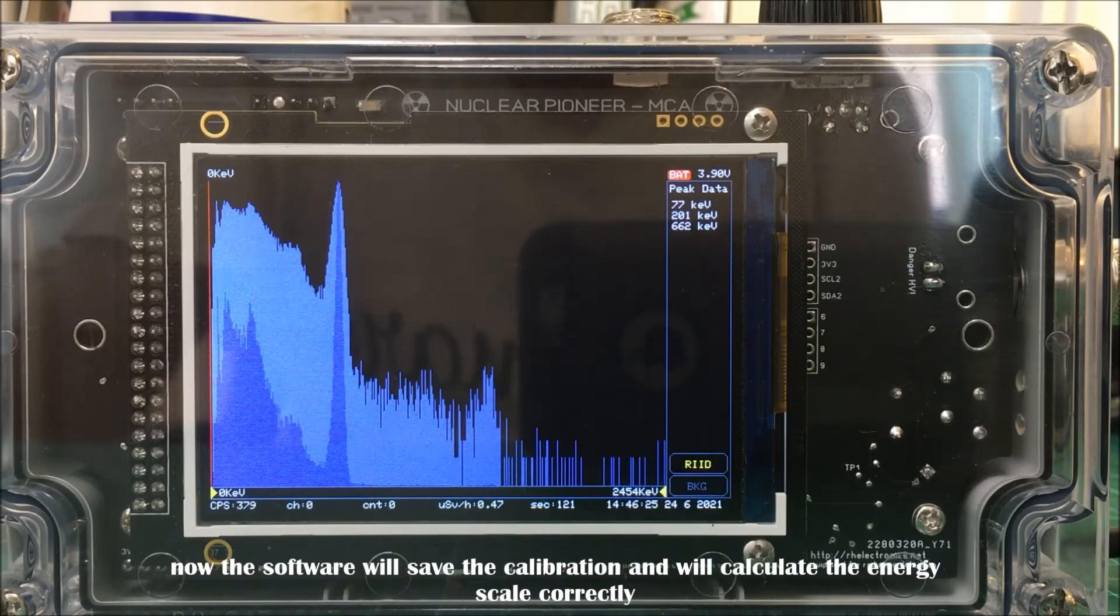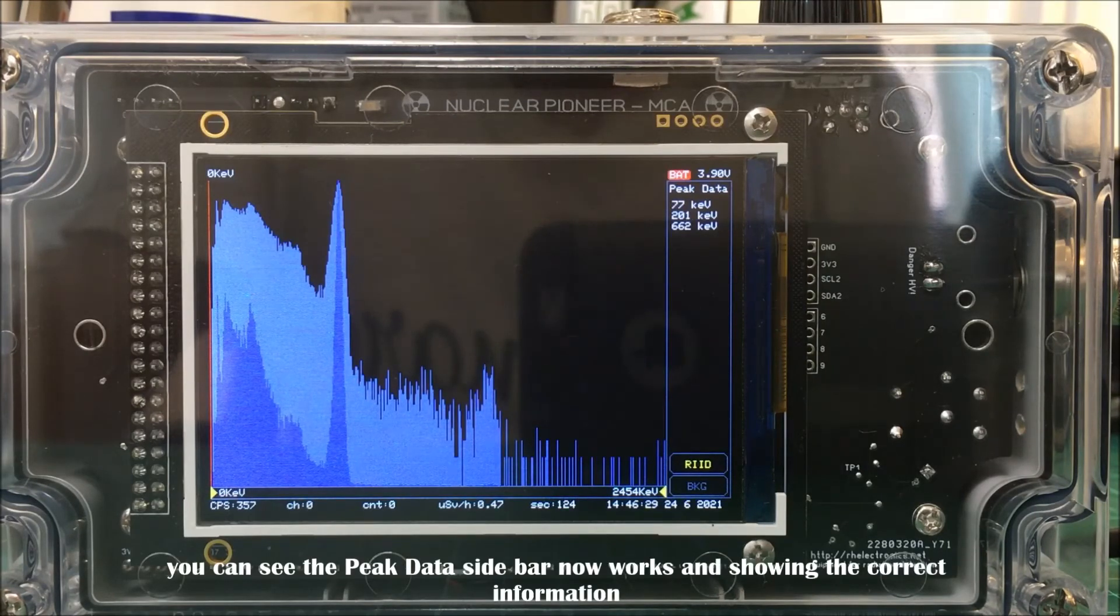Now the software will save the calibration and calculate the energy scale correctly. You can see the peak data sidebar now works and shows the correct information.